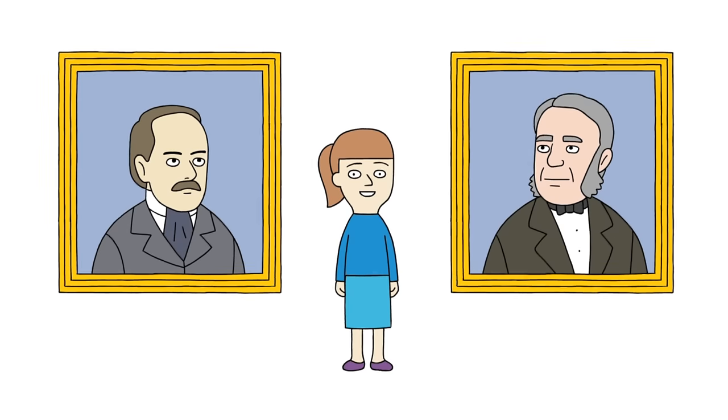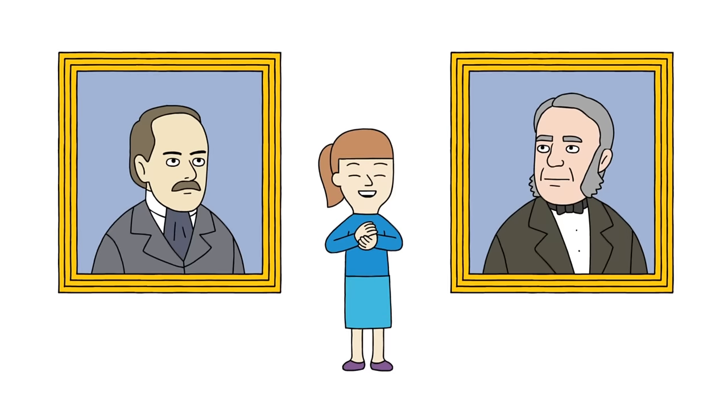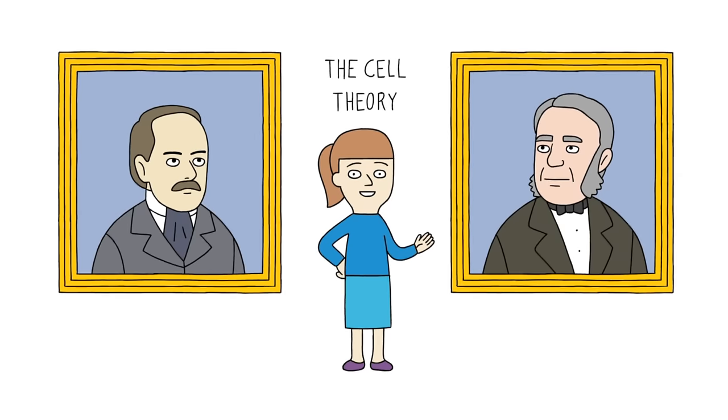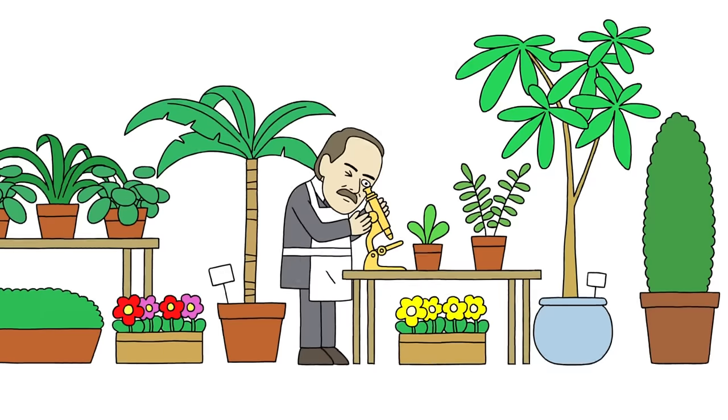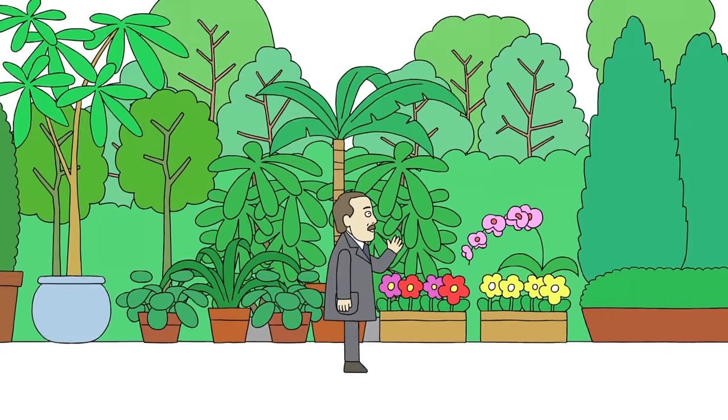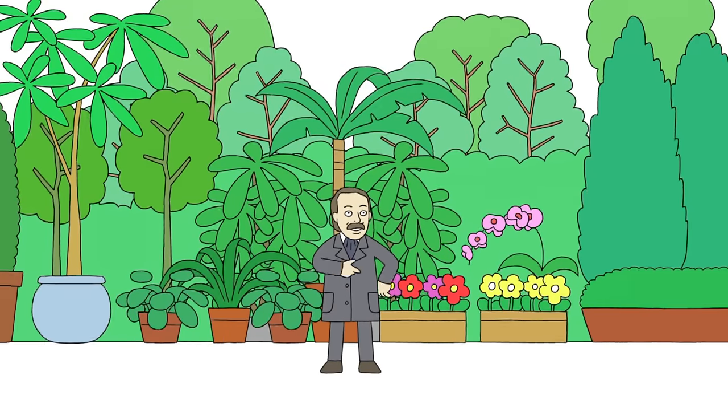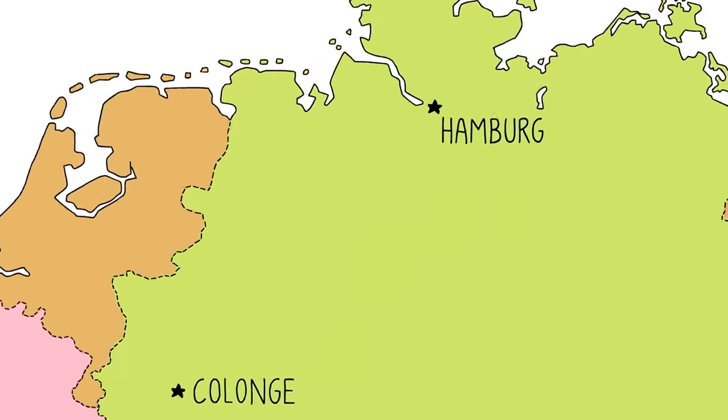Fast forward to the 1800s, where two German scientists discovered something that today we might find rather obvious, but helped tie together what we now know as the cell theory. The first scientist was Matthias Schleiden, a botanist who liked to study plants under a microscope. From his years of studying different plant species, it finally dawned on him that every single plant he had looked at were all made of cells.